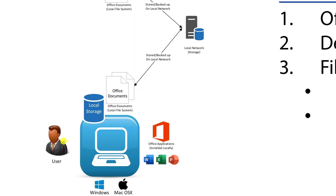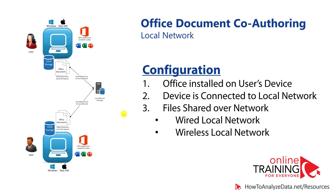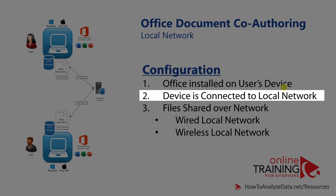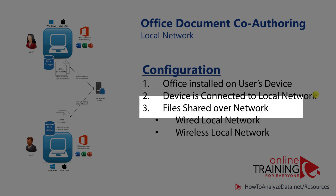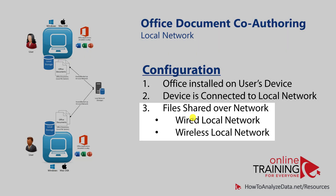In this model, one user would create or edit a document, put it onto the shared local drive, notify another user, and then that user — using a similar desktop-based configuration — would go ahead, review the changes, and provide suggestions. This was a great innovation at the time, but the configuration required Office to be installed on the user's device, the device to be connected to the local network, and files shared over a wired or wireless local network.